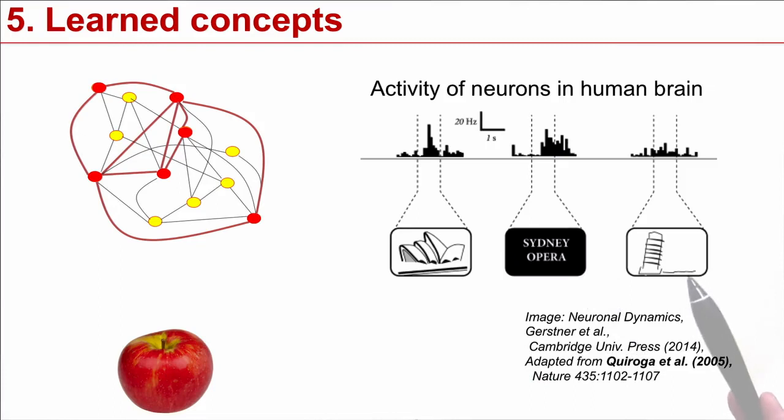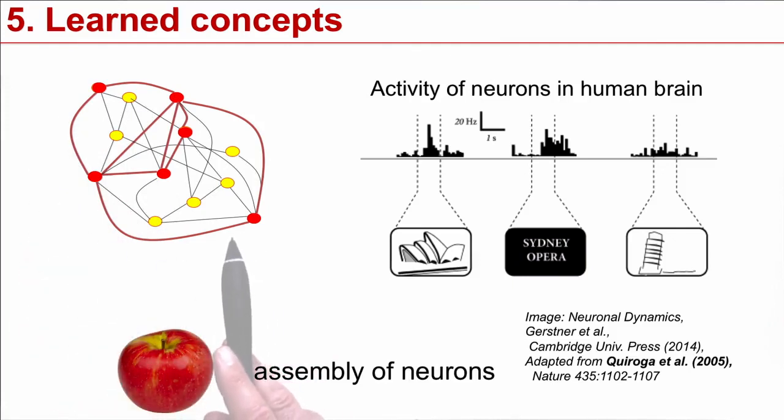And this neuron is not stimulated by the Pisa tower. So the likelihood that you would find one single neuron that represents the Sydney opera house, if this is the only neuron to do so, would be extremely low. The fact that you find such a neuron at all is an indication that there is this kind of Hebbian assembly, an assembly of neurons that represent together the concept of Sydney opera house.